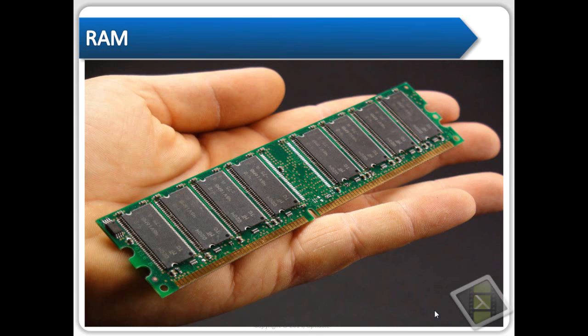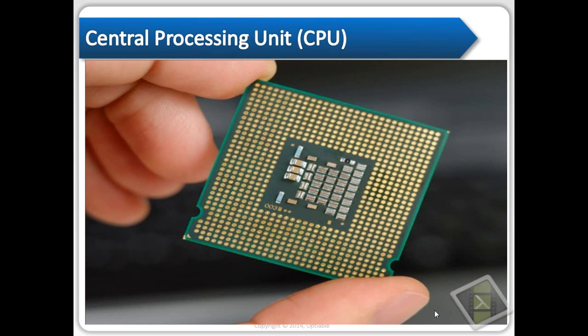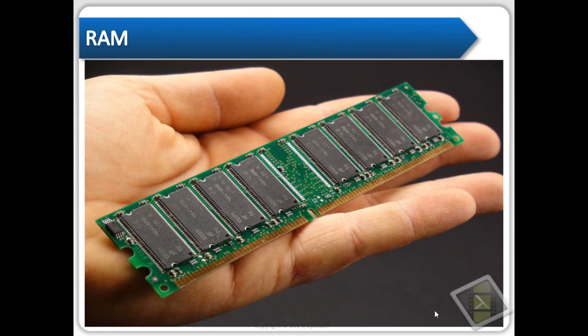Going back to the CPU: about four years ago when you bought a computer, it was common to have a 32-bit architecture, which limited you to four gigabytes of RAM. Now everything you buy should be a 64-bit chip, and you want 64-bit Windows, which allows you to have as much RAM as you can process. So 32-bit is bad; 64-bit is good.